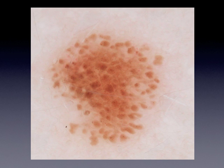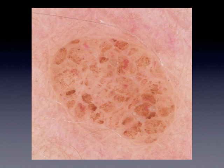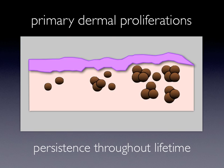The fact that globular nevi are seen throughout all ages has led to the concept that the globular nevi seen in children may develop into an otherwise stereotypical dermal nevus as seen in elderly. In other words, it has been proposed that globular nevi represent primary dermal proliferations that persist throughout all lifetime.